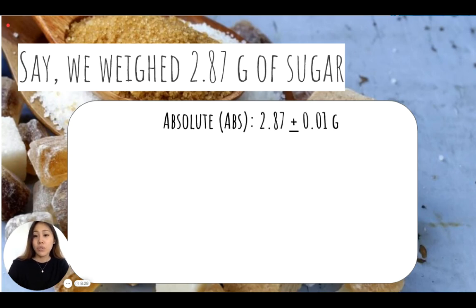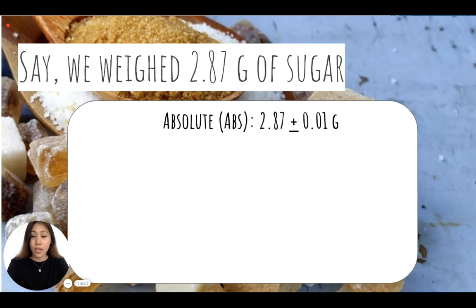The absolute uncertainty for 2.87 grams of sugar, using an electronic balance, would be plus or minus 0.01 grams — to the hundredths place, because the value is reported to the hundredths. So let's say that electronic balance is really accurate; we give it 0.01 grams.